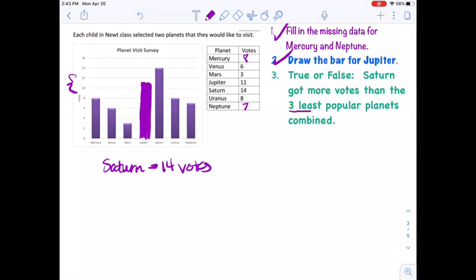What does it mean to have the least popular planets? What does it mean when we're asked to look at the three least popular planets? Well, to be the least popular, it means the three with the lowest number of votes. So let's look at our chart. Mars we can see is the lowest and it only has three votes. I can also see Venus has six votes, and then we gathered the information about Neptune. Neptune had seven votes.